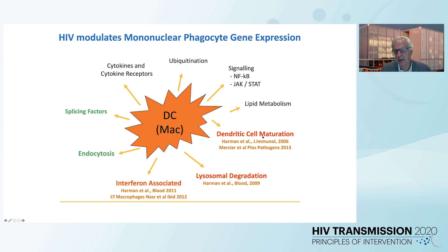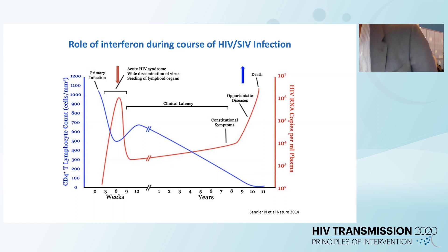The HIV inoculum and its contained extracellular vesicles can induce dendritic cell maturation, and also influence the interferon system completely. I'll come back to that after Andrew has shown you more about what happens in the human anogenital epithelium and authentic mononuclear phagocytes.